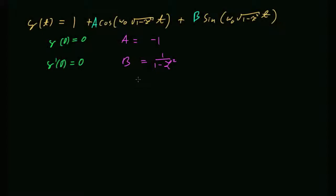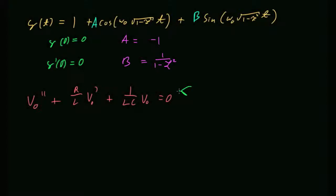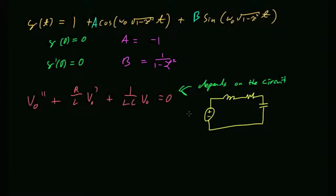Before moving on, the instructor addresses whether the characteristic equation is always v-out double-prime plus R/L times v-out prime plus 1/LC times v-out equals zero. The answer is: it depends on the circuit. This equation only makes sense for that specific circuit — we only looked at one circuit.